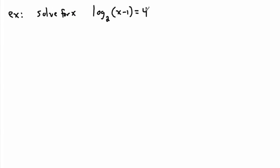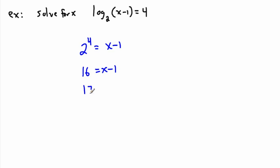Let's do another example: solve for x. Log base 2 of (x minus 1) equals 4. That looks totally crazy, but again, just make it an exponential equation. This to the this equals this: 2 to the 4 equals x minus 1. What's 2 to the 4? 2 times 2 is 4, times 2 is 8, times 2 more is 16. So 2 to the power of 4 is 16. So 16 equals x minus 1. Move the minus 1 over and it becomes plus 1, so 17 equals x. Therefore x is 17.